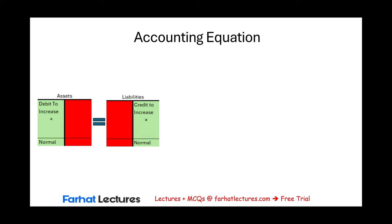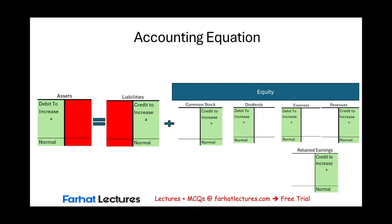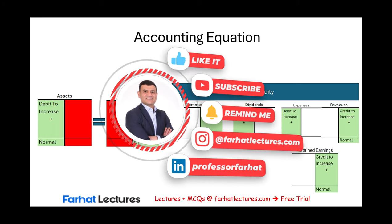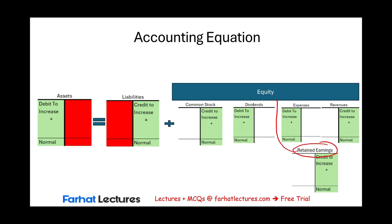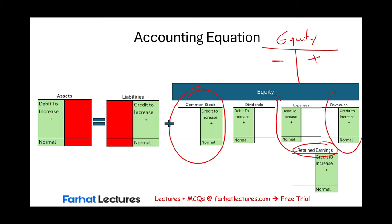Let me show you the T-accounts in the form of the accounting equation: Assets equal to liabilities plus equity. Revenues and expenses flow into retained earnings, which is an equity account. Equity increases on the credit and gets reduced on the debit. Common stock and revenues increase equity, while dividends and expenses reduce equity. The normal balance for retained earnings is a credit. You could have a debit balance if you have more expenses than revenues over the years.